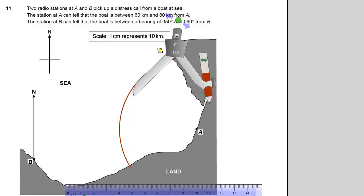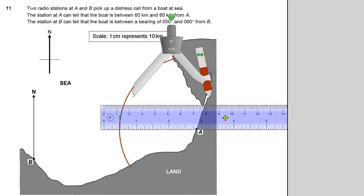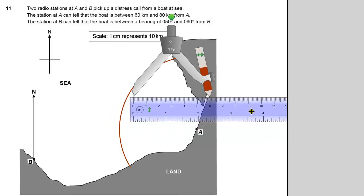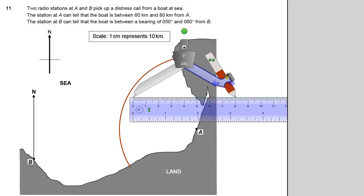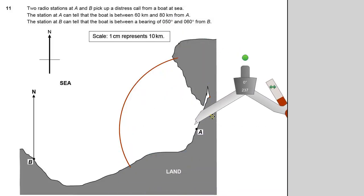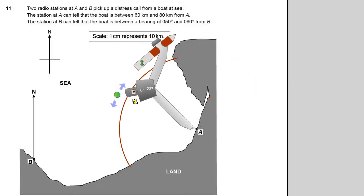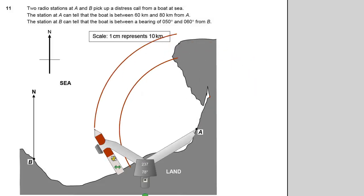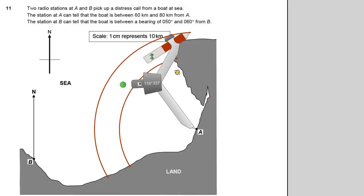Now I need to measure out 8 centimetres. So I know my boat must be between those two lines, so that's one thing done.